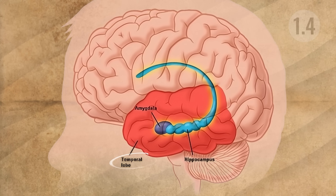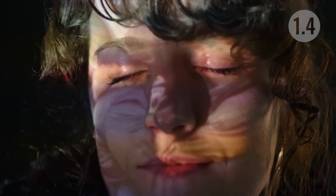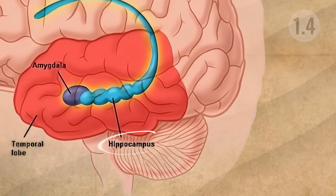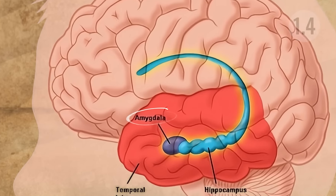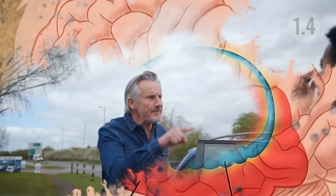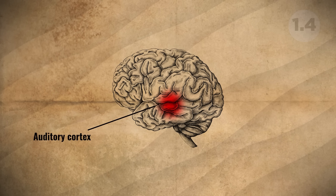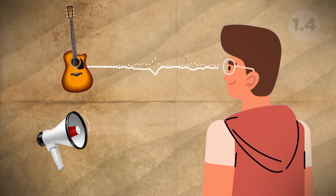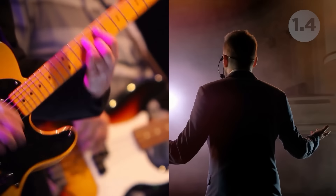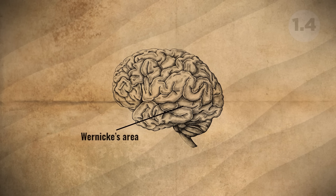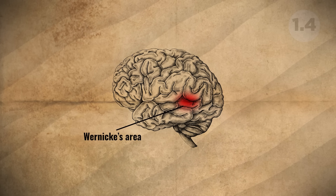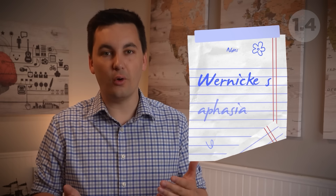Just below the parietal lobe, we have the temporal lobe, located right above your ears. The temporal lobe is involved in processing auditory and linguistic information, recognizing faces, and assisting with memory. Located within the temporal lobe is the hippocampus, which helps us learn and form memories — though it is not where memories are stored. At the end of each arm of the hippocampus is the amygdala, where emotional reactions originate — including fear, anxiety, and aggression. The auditory cortex processes the sounds you hear. Wernicke's area, typically in the left temporal lobe, is responsible for creating meaningful speech. If damaged, a person will lose the ability to create meaningful speech — known as Wernicke's aphasia.